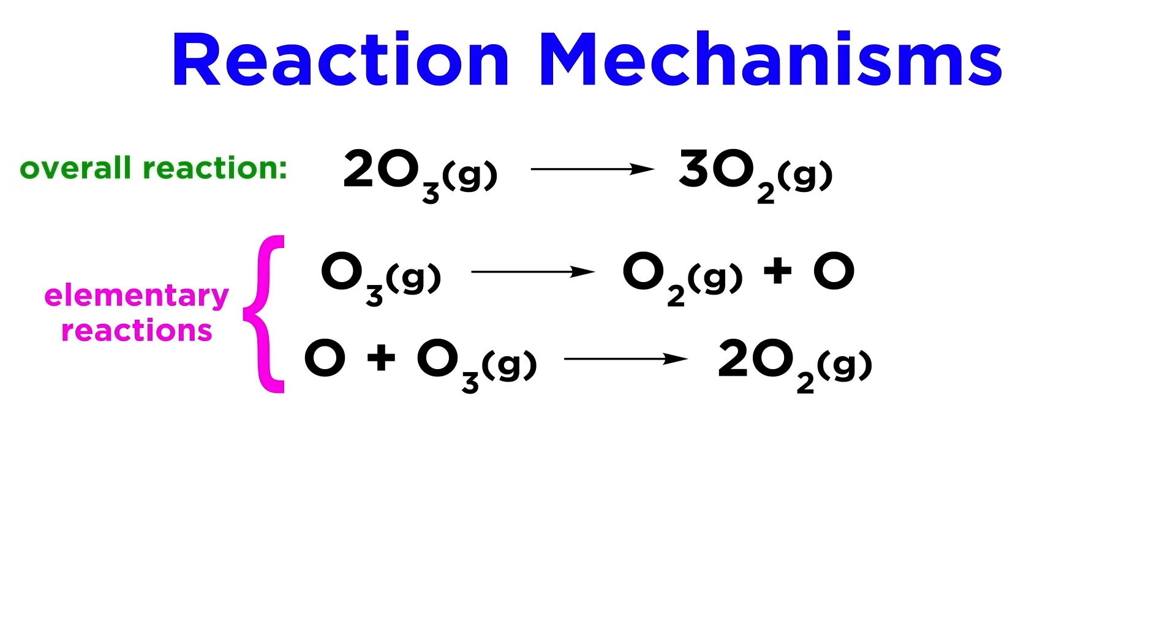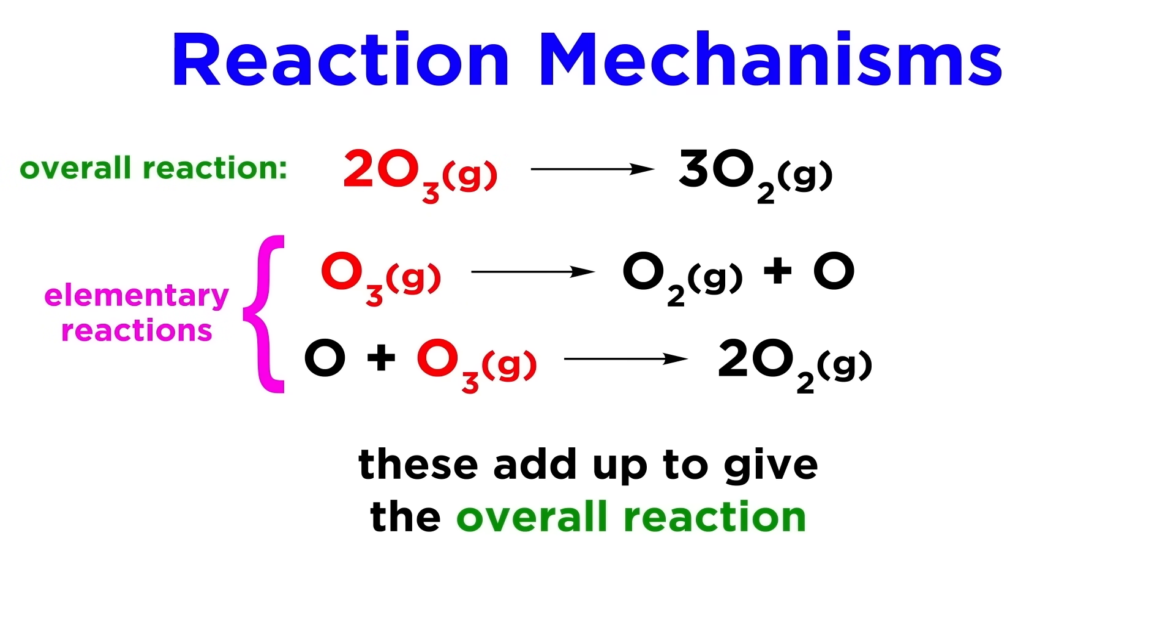Each of these steps will be referred to as an elementary reaction. These occur exactly as written and cannot be broken down further into simpler steps. These elementary reactions add up to give the overall reaction, which in this case would show two ozone molecules yielding three molecules of diatomic oxygen.